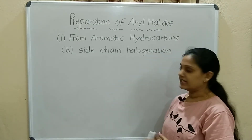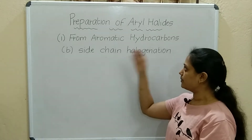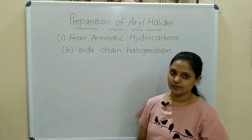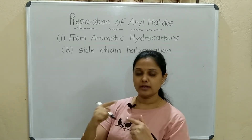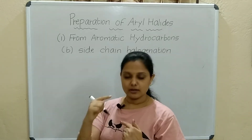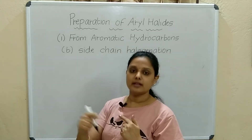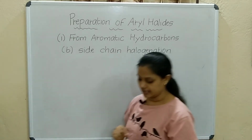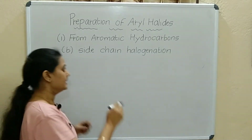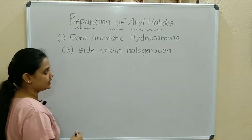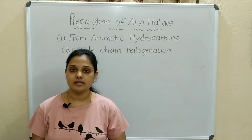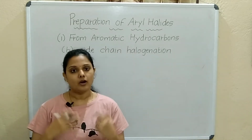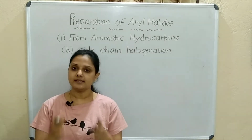Now the second preparation from aromatic hydrocarbons is side chain halogenation. That means the halogen is not directly attached to the benzene ring but is in the side chain. Side chain halogenation occurs in the presence of light or heat — sunlight or heat is required.